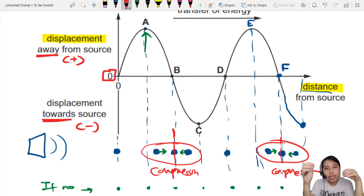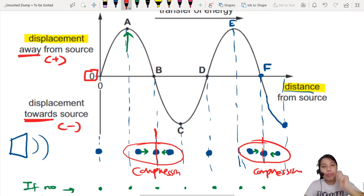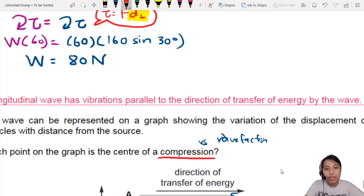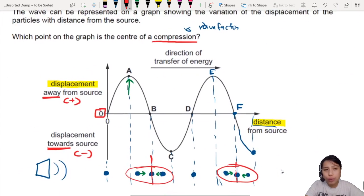So just imagine all these particles are just oscillating left and right. And there will be places where the particle is squashed. When they are squashed, we call that compression.